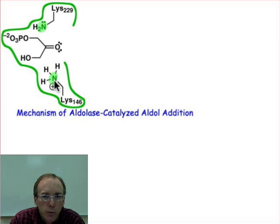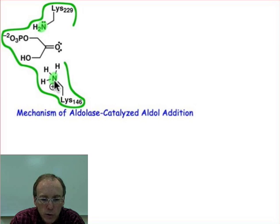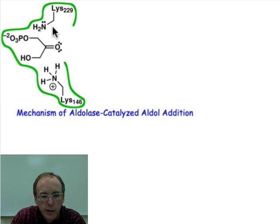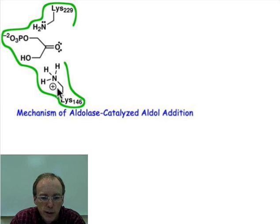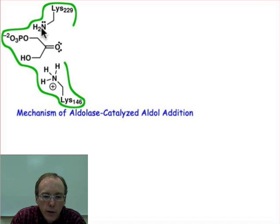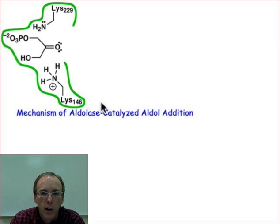It would be too difficult to make them both cationic. Because of electrostatic repulsion, they don't want these two positive charges so close to one another. That allows the position at lysine 229 to be nucleophilic, and the first thing that happens is lysine 146 will function as a general acid while the nitrogen on lysine 229 serves as a nucleophile to add into the carbonyl.